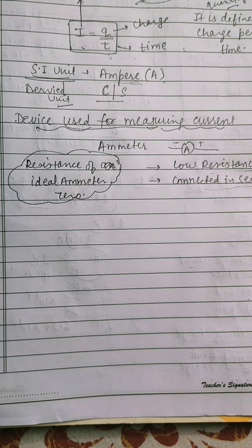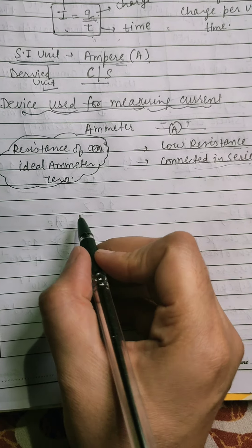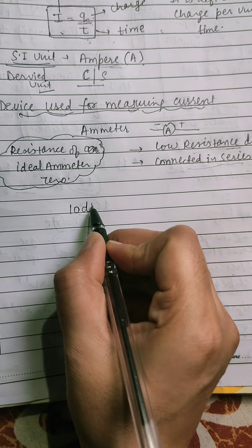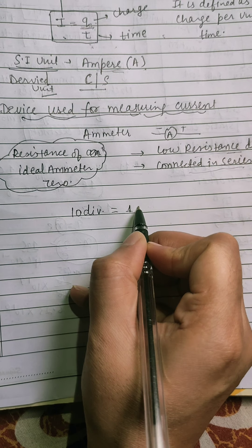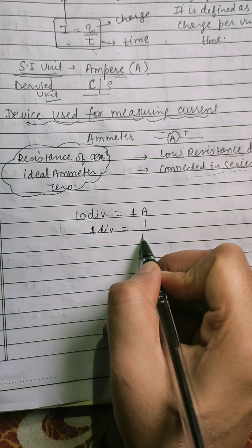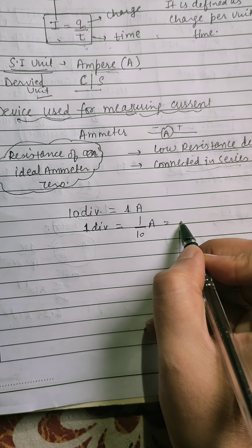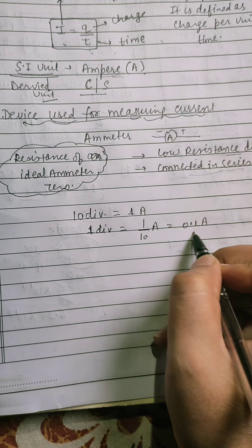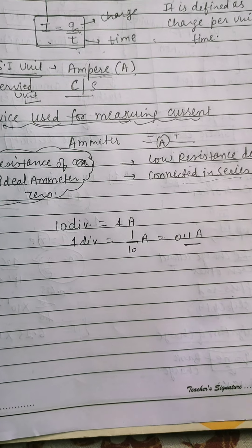Resistance of any ideal ammeter is 0. Because it is a low resistance device. Now, least count of ammeter. We consider 10 division equals to 1 ampere. So, 1 division equals to 1 by 10 ampere. So, 0.1 ampere. This is the least count of ammeter.